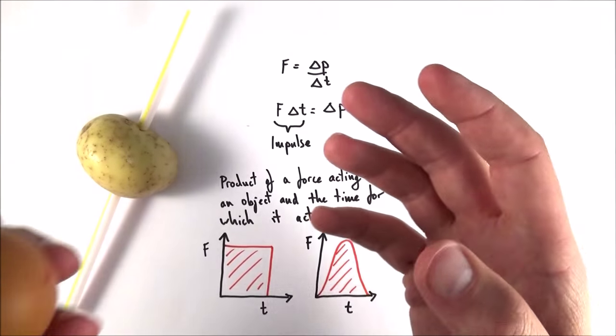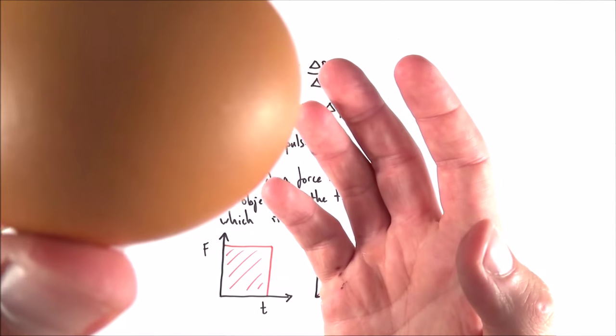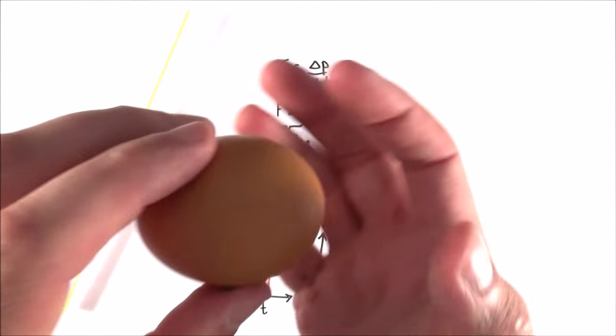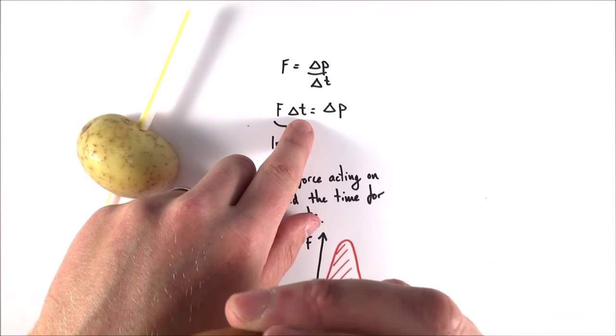We can also think about the reverse. How is it that you reduce the force in an object? If you've got something perhaps like an egg and you drop it, then when you catch it, you move your hand down very slightly. And what this does is this increases the collision time.